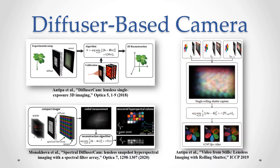Recently, a diffuser-based lensless camera was presented for several applications. The principle enabling the diffuser-based imaging is the caustic-like PSF of the diffuser, which spreads a unique pseudo-random pattern on the sensor. Such a PSF enables compression and reconstruction of an additional modality, like depth, time, or spectrum, along with the 2D images.